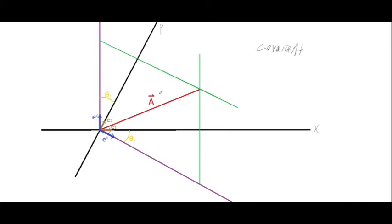You'll notice I have these purple axes here — I'll call them y-prime and x-prime. These are our dual axes. You can see that y-prime is perpendicular to our x, and x-prime is perpendicular to our y. The covariant components are where this projection line intersects these new dual axes. I have e¹ and e² for our dual bases, and their indices are in the superscript.